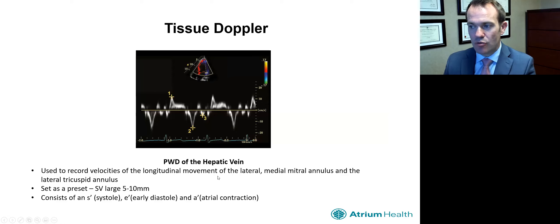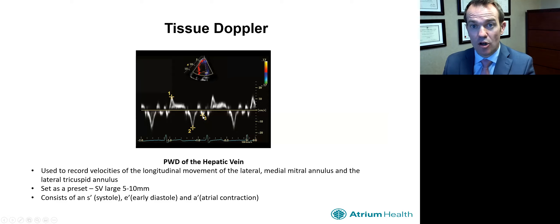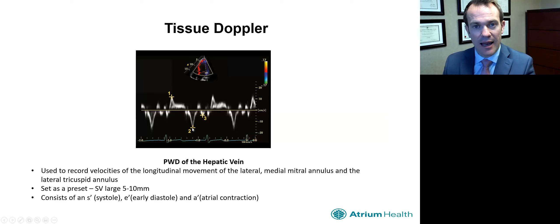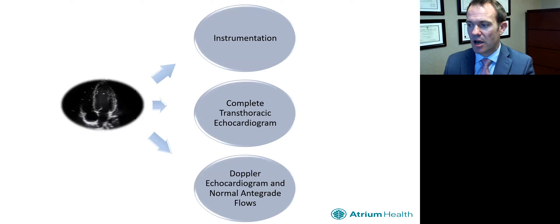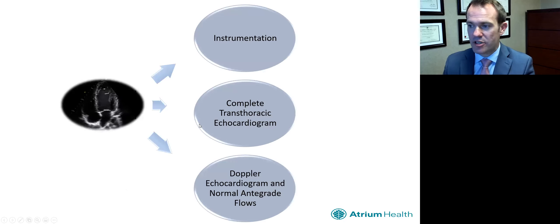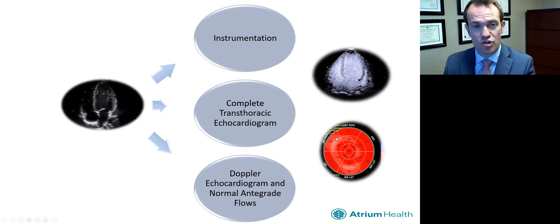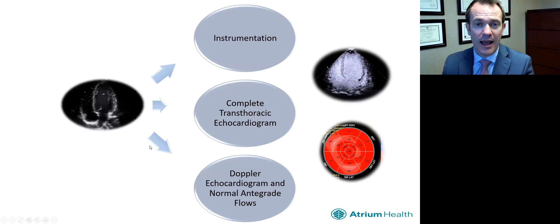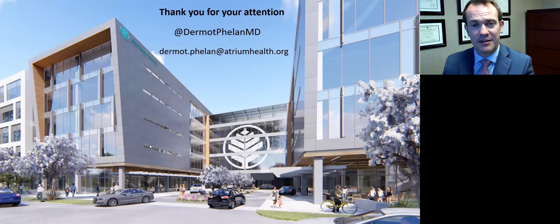Finally, tissue Doppler — we measure an S wave, then an E and A wave, looking at the longitudinal motion of the mitral annulus and the tricuspid annulus. This is done using a preset and gives us a lot of information about the diastolic function of the heart. We didn't touch upon the use of contrast or strain because there will be talks dedicated to those. I hope you found this useful and I hope you enjoy the rest of the meeting. Thank you very much.